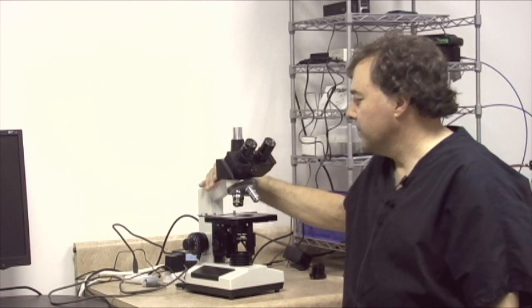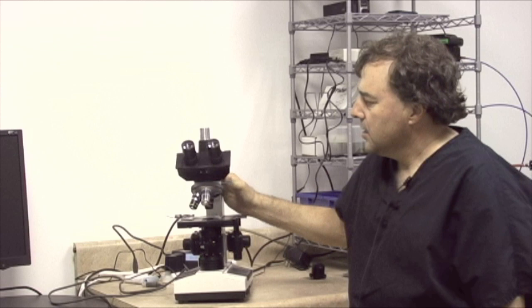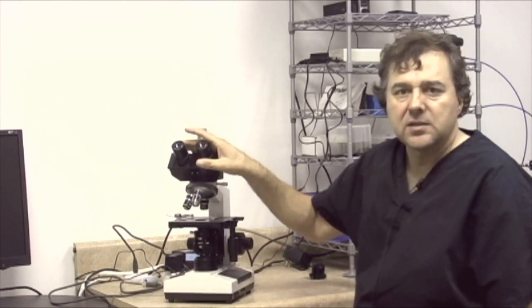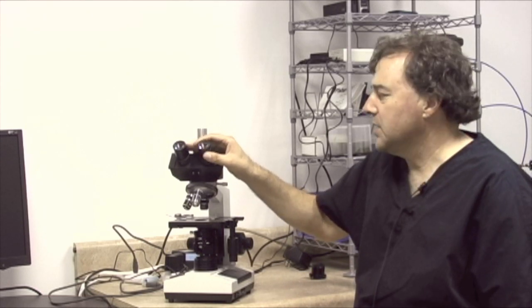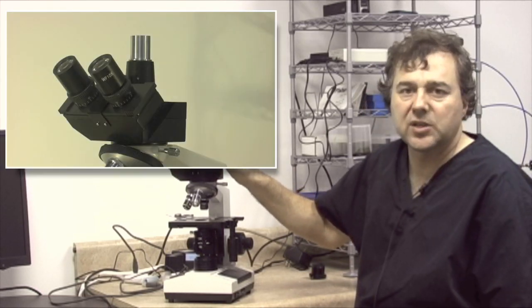Now let's go over the parts of the microscope. Top here are the ocular lenses. These are also called the eyepiece lenses. These are 10x or 10 power.